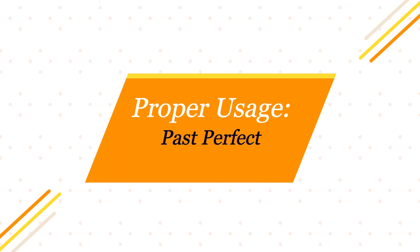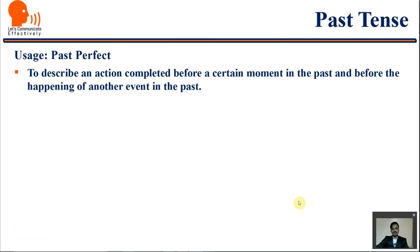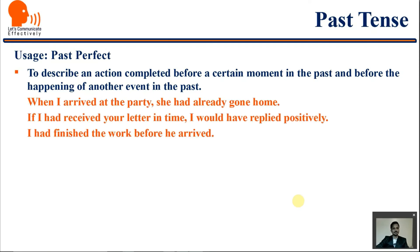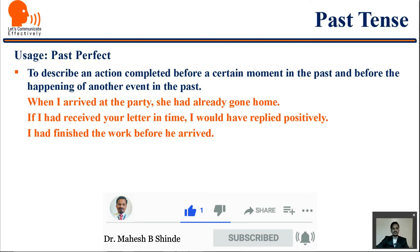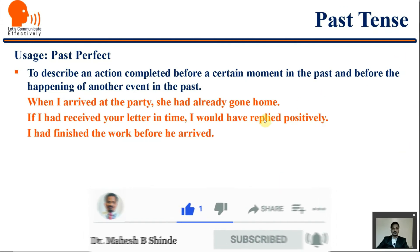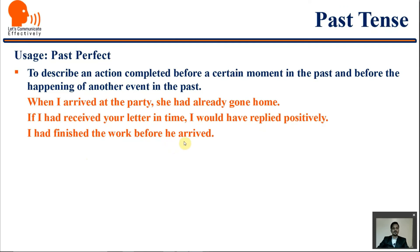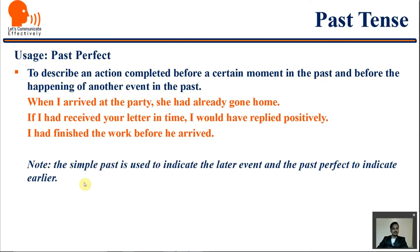Past perfect is used to describe an action completed before a certain moment in the past and before the happening of another event. Examples: 'When I arrived at the party, she had already gone home.' 'If I had received your letter in time, I would have replied positively.' 'I had finished the work before he arrived.' Simple past indicates the latter event and past perfect indicates the earlier one.